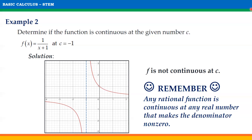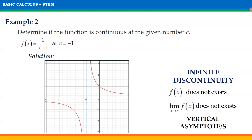Observing the graph of the given function, a rational function is asymptotic at the value of x that makes the denominator zero; thus, any rational function is continuous at any real number that makes the denominator non-zero. This discontinuity is an example of infinite discontinuity, represented by a gap, and is a type of non-removable discontinuity. This happens when f(C) does not exist and the limit of f(x) as x approaches C does not exist. The gap represents a vertical asymptote.